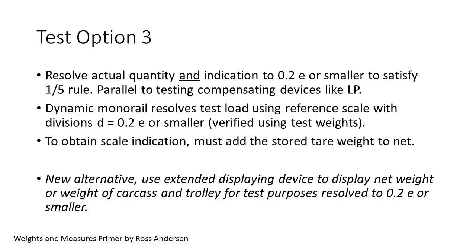We resolve both the actual quantity and the indication to 0.2E or smaller to satisfy the one-fifth rule. For the dynamic monorail, the trolley and carcass test load is measured to 0.2E or better on a reference scale verified prior to conducting the test. To get the indication for the test, we must add the stored tare weight to the net weight to get back to the gross weight of the trolley and carcass that was measured. With the task group recommendations, there is a new alternative to use an extended displaying device.